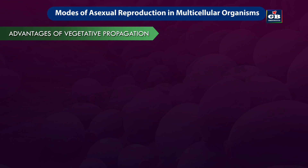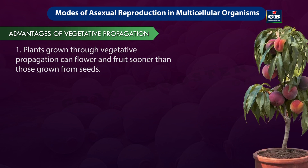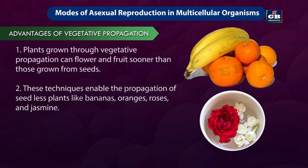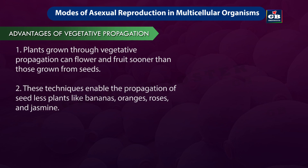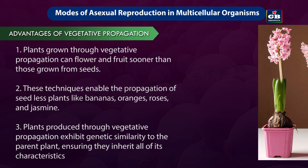Advantages of vegetative propagation: First, plants grown through vegetative propagation can flower and fruit sooner than those grown from seeds. Second, these techniques enable the propagation of seedless plants like bananas, oranges, roses, and jasmine. Third, plants produced through vegetative propagation exhibit genetic similarity to their parent plant, ensuring they inherit all of its characteristics.